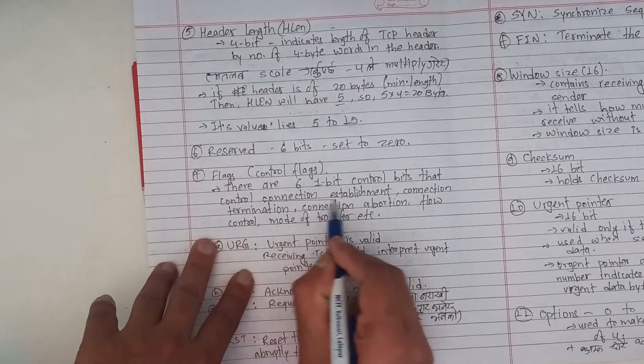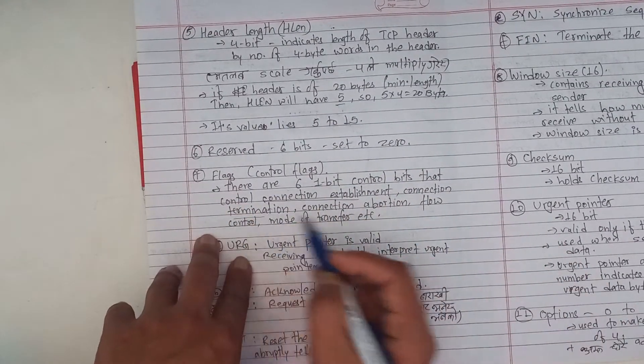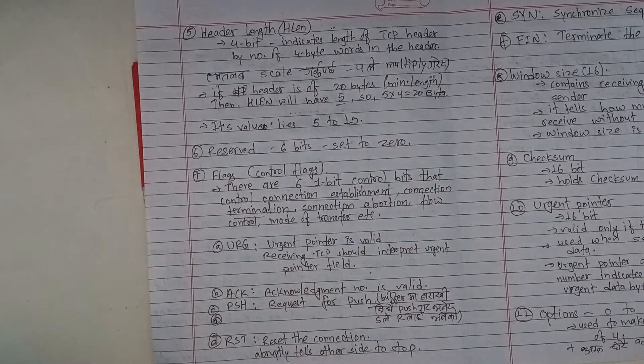There are 6 one-bit control bits that control connection establishment, connection termination, connection abortion, flow control, and mode of transfer.